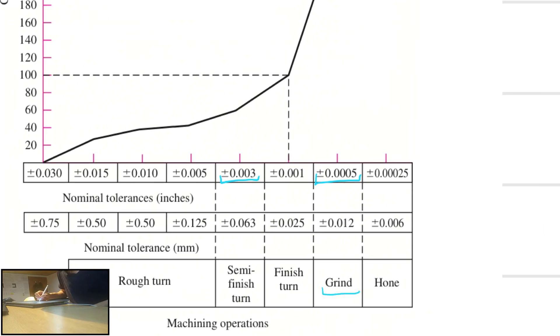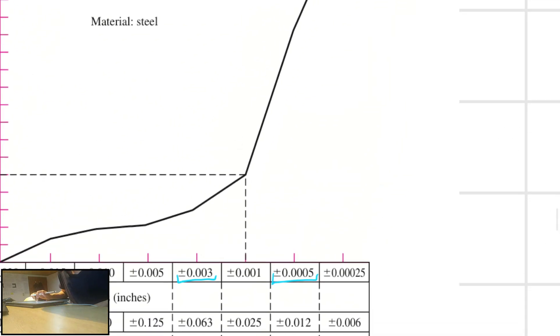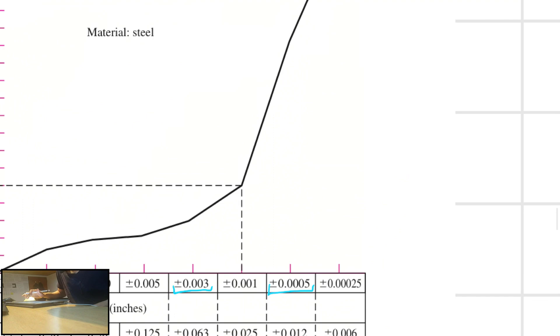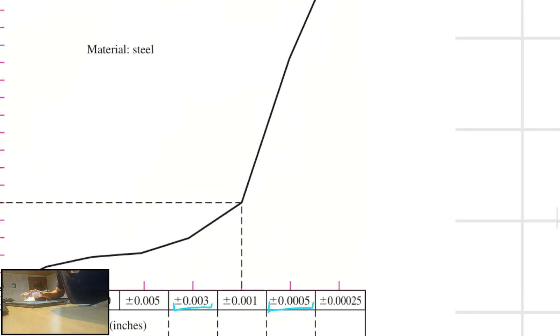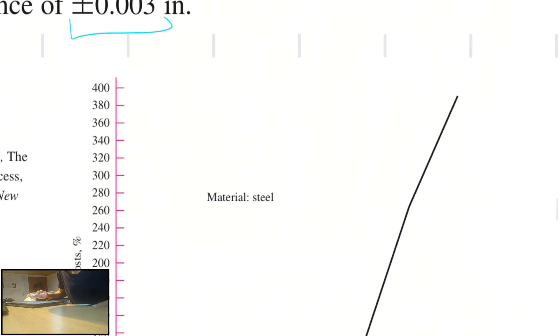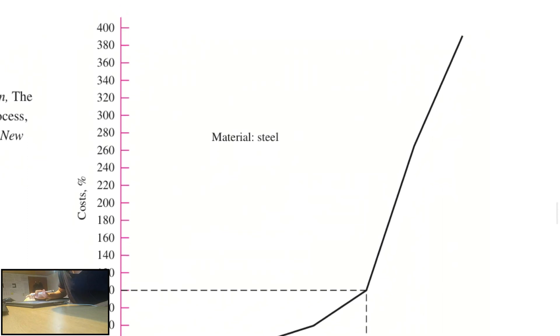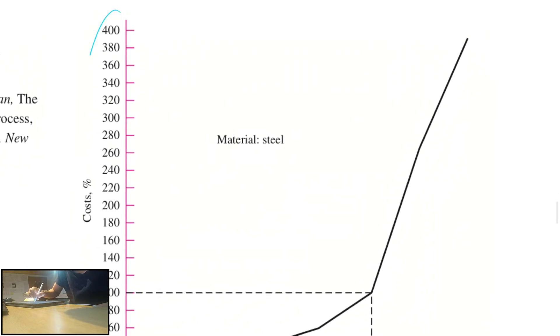So we have a grind versus a semi-finished turn. All we have to do is look for the value in the y or in this axis, and that would be all.